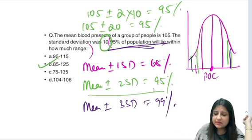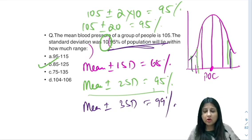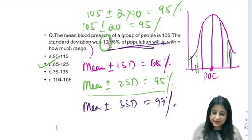Your answer becomes 85 to 125. This is a very commonly expected numerical.